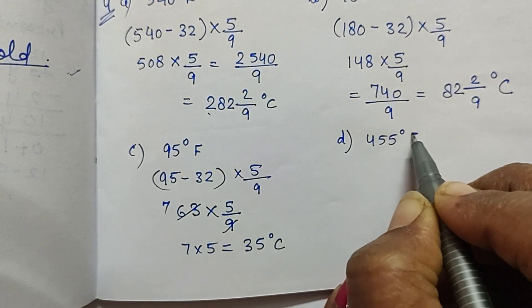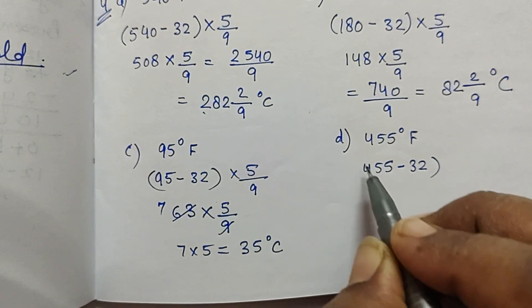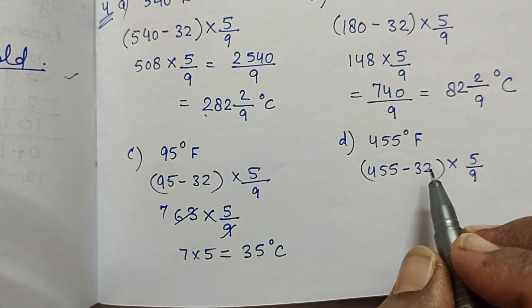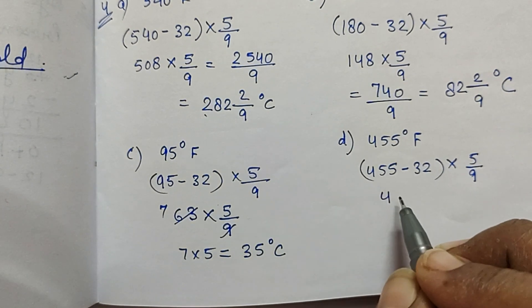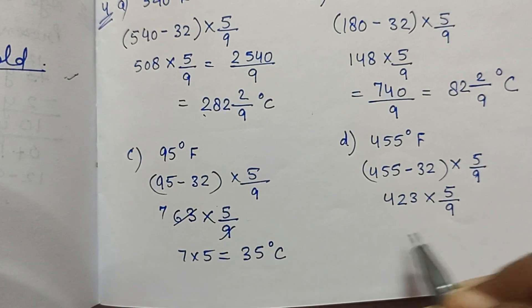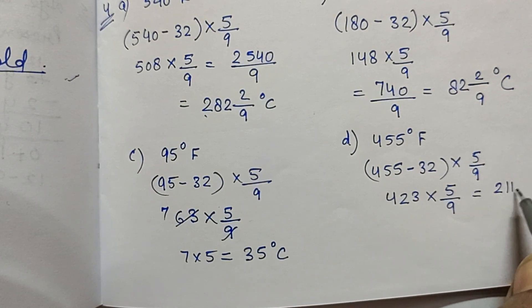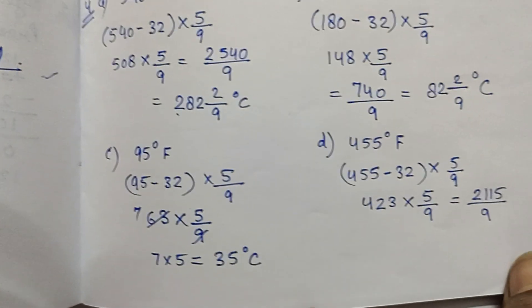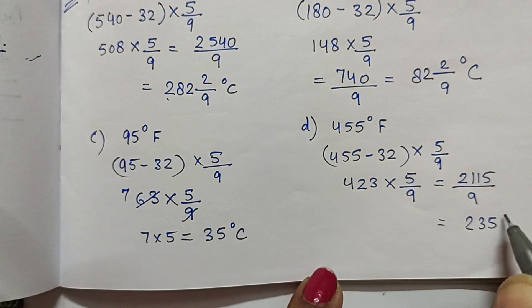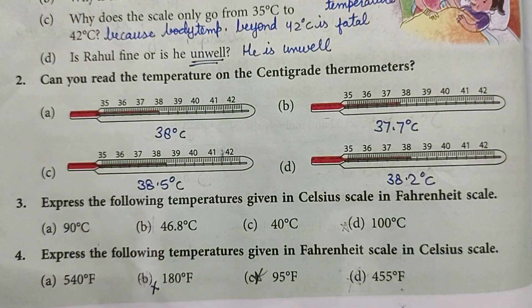Part D: 455 degree Fahrenheit. So 455 minus 32 multiplied by 5/9. 455 में 32 minus करेंगे तो आएगा 423. 423 multiplied by 5/9 is equal to 2115/9. 9 से divide करेंगे आएगा 235 degree Celsius. Okay, so today we have completed self-practice 14E.